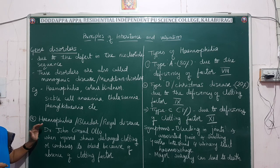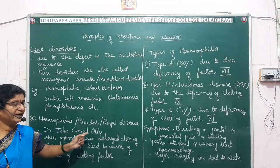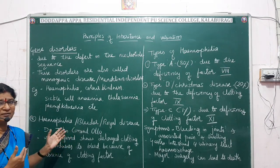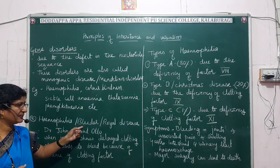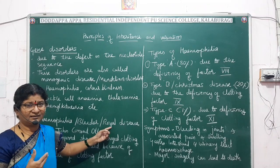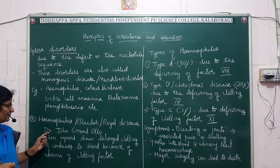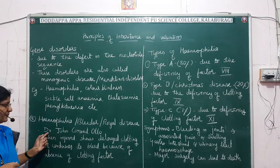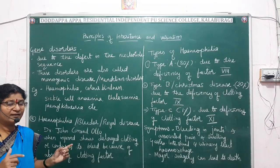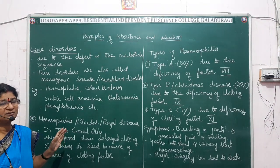The first disorder is hemophilia, also called bleeder's disease or royal disease. It is called bleeder's disease because blood clotting is delayed when injury occurs. It is called royal disease because it was first described in detail in the royal family of England — Queen Victoria's family. It was first described by Dr. John Conrad Otto. This topic will be asked for 2 to 3 marks in the annual exam.